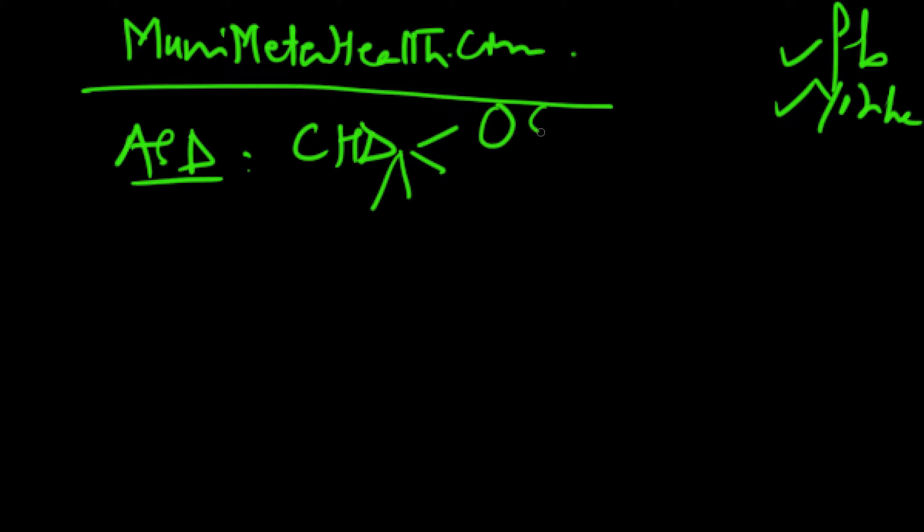ASD is of four types. The commonest variety is the ostium secundum, and the second commonest will be ostium primum. The third variety is sinus venosus, and the fourth is the coronary sinus. Coronary sinus is extremely, extremely rare. So just remember that this is the rarest form.